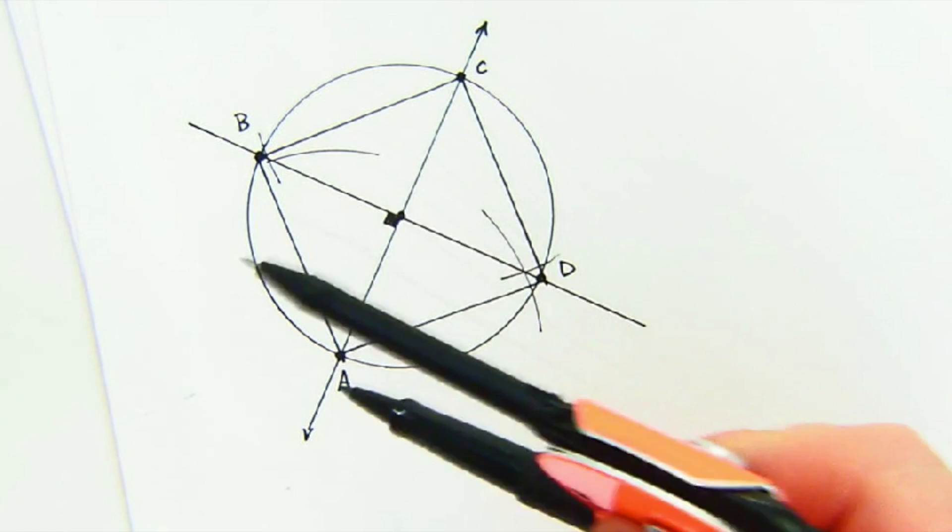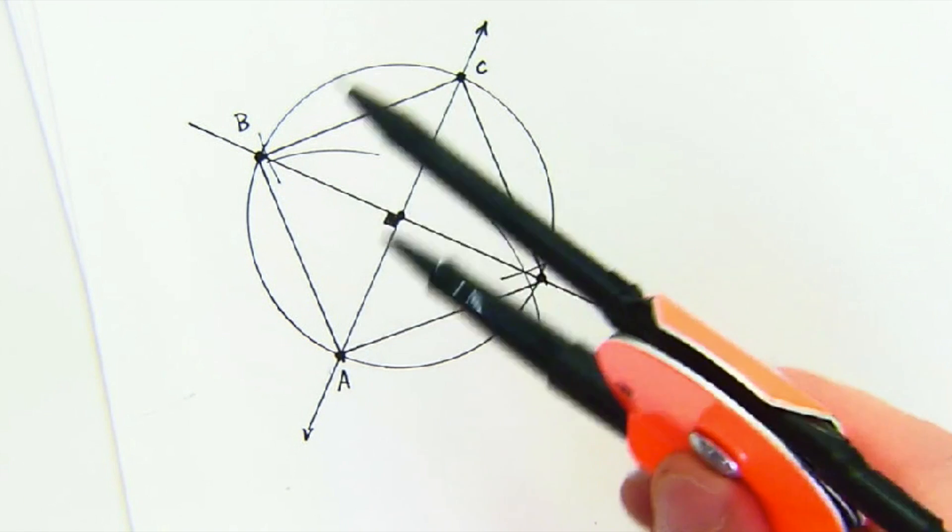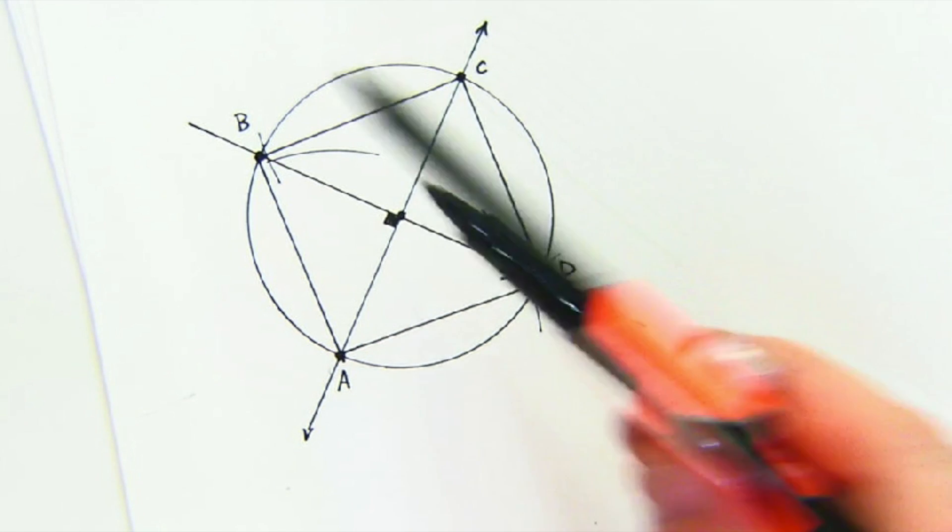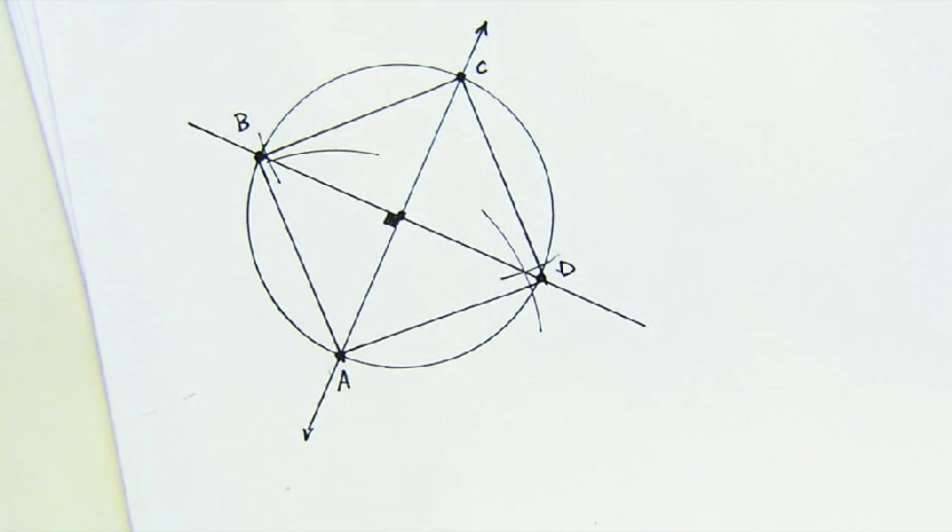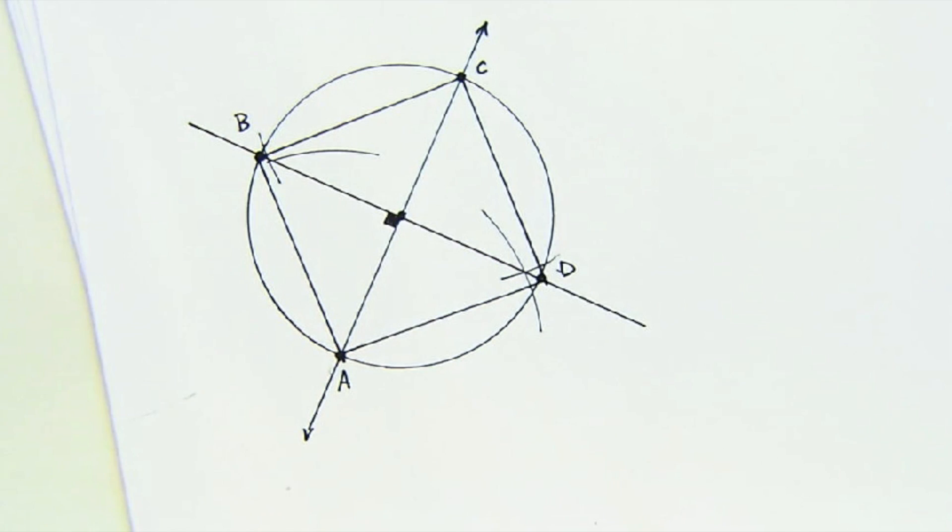So again, what I did is by creating the diameter, I created two of the points, and by doing the perpendicular bisector, or the perpendicular line through a point, I created the other two, and it creates our inscribed square. Inscribed means all vertices are on the circle, and it's an inscribed square.